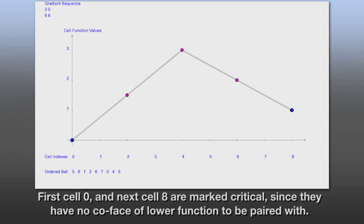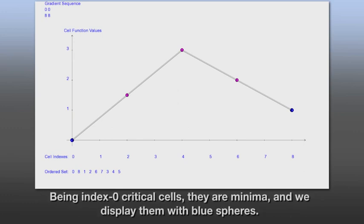First, cell 0, and next, cell 8, are marked critical, since they have no coface of lower function to be paired with. Being index-0 critical cells, they are minima, and we display them with blue spheres.